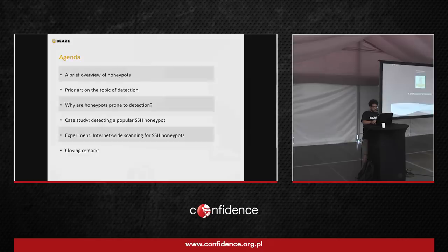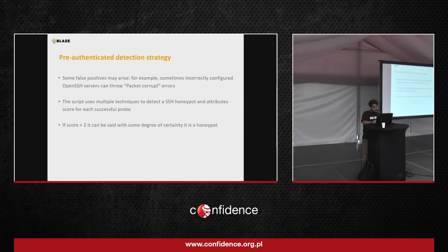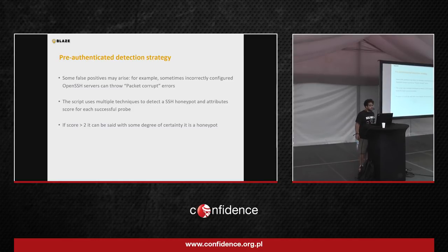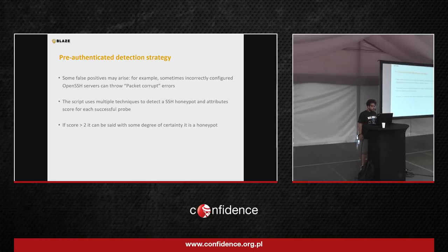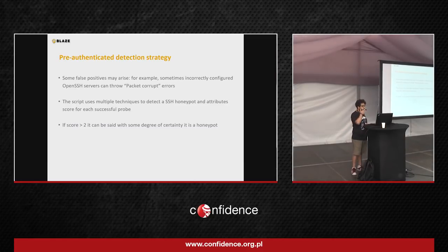There are also some false positives with these techniques, because some misconfigured OpenSSH servers — especially around version 5.3 — keep throwing packet corrupt errors. The script released today on GitHub uses these different techniques and gives a score depending on which response comes back. If the score is higher than 2, we consider it a honeypot with a certain degree of confidence.